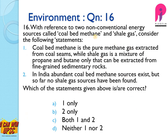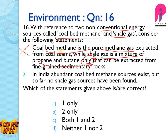Question 16: With reference to two non-conventional energy sources — coal bed methane and shale gas — consider the following statements. Statement 1: Coal bed methane is the pure methane gas extracted from coal seams, while shale gas is a mixture of propane and butane only, extracted from fine-grained sedimentary rocks. Note the word 'only' — such extreme statements are usually wrong in UPSC, and this is wrong because shale gas is a mixture of methane, propane, and other gases. Statement 2: In India, abundant coal bed methane sources exist but no shale gas sources have been found — this is also wrong. The answer is D — neither one nor two.